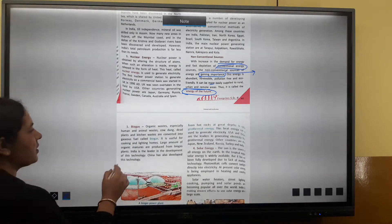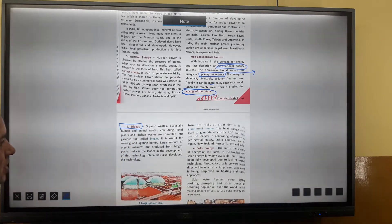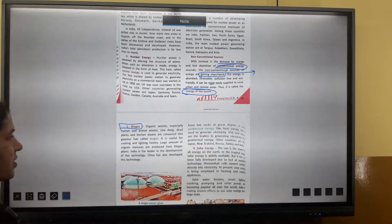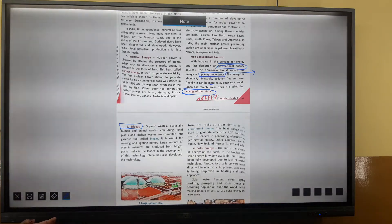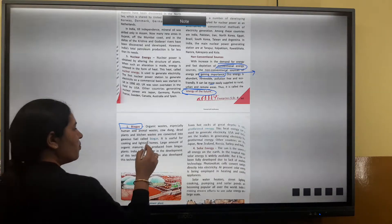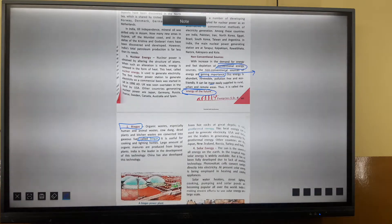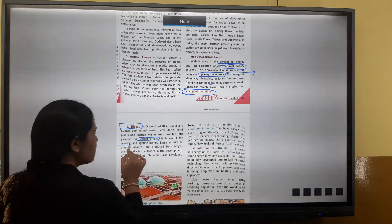The first is biogas. Biogas is a non-conventional source of energy where organic waste is converted to gases as fuel. It is useful for cooking and lighting.